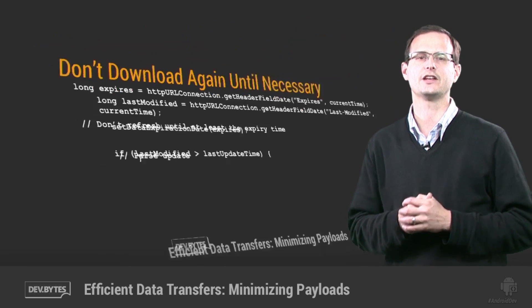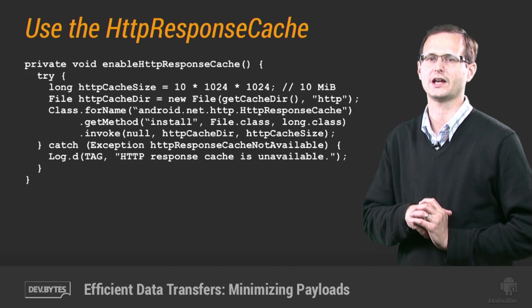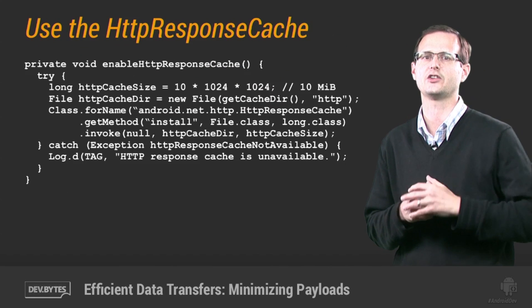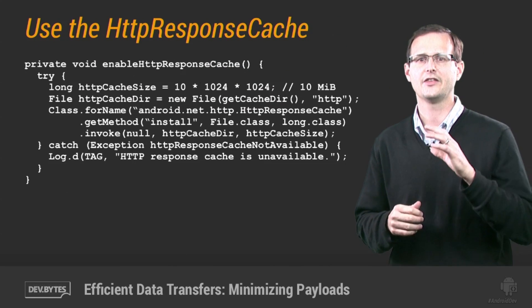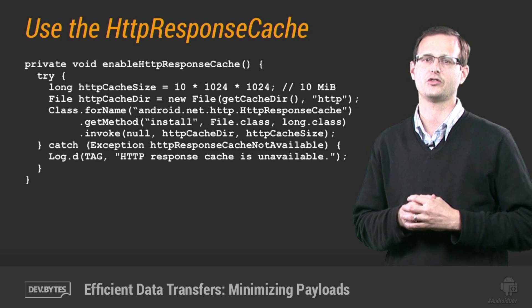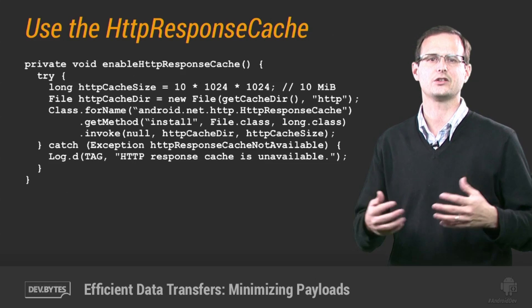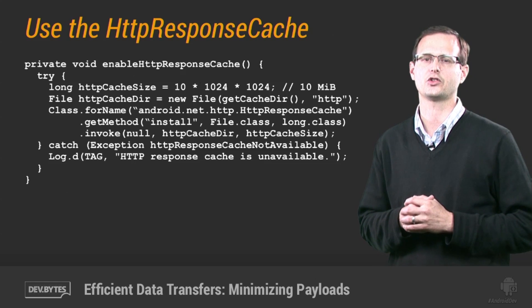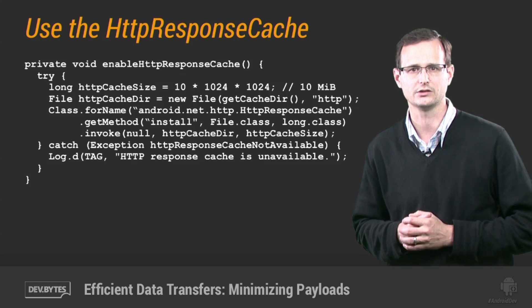To make your life easier, Android 4.0 introduced an HTTP response cache to the HTTP URL connection class that handles this caching for you, inspecting headers and contacting the server only when the cache is expired or data doesn't exist locally.